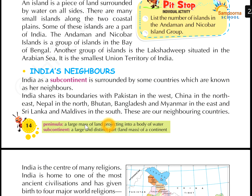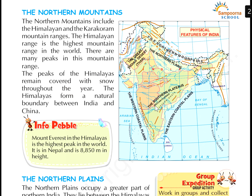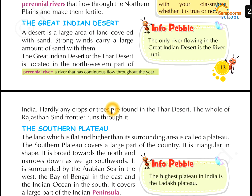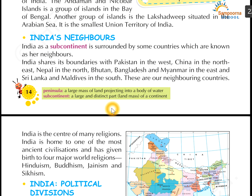What is the meaning of peninsular? A peninsula is a large mass of land projecting into a body of water. This land mass projects deeply into the water. That is why it is called a peninsula — it is covered by water on three sides. That is why India is also called a peninsular region.